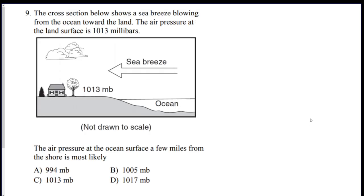Number nine, we got a sea breeze, a little picture. The air pressure at the surface, a few miles from the shore, so like over here, is most likely what? Well, remember, to get a breeze or to get wind, you need to go from high pressure to low pressure. So you want, if this is the low, you want this temp pressure to be higher. So it's got to be D. 1,017. If it was 1,013, there would be no wind. And if it was B or A, that means that the wind would go the other way.